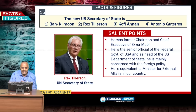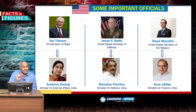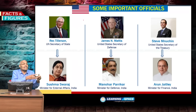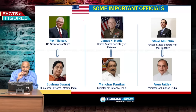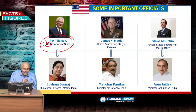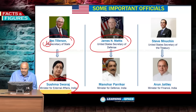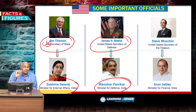The new US Secretary of State is Rex Tillerson, equivalent to the Minister of External Affairs in India. The US is a presidential republic while India is a parliamentary republic, hence differences in designations. US Secretary of Defense James Mattis is equivalent to India's Minister of Defence.